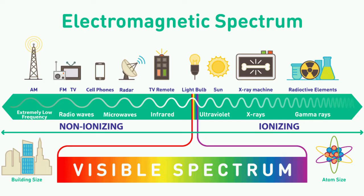Non-ionising radiation includes visible light and lasers, ultraviolet light from man-made sources and sunlight, infrared radiation and electromagnetic fields such as microwaves and radio waves.